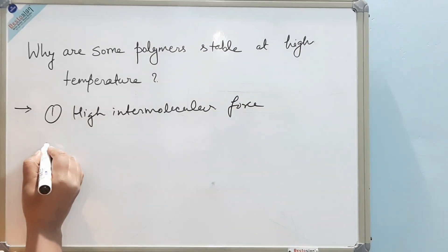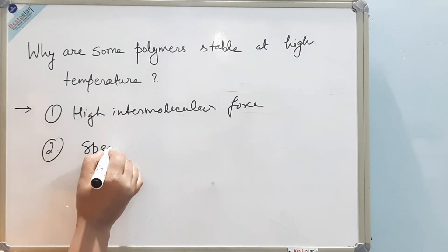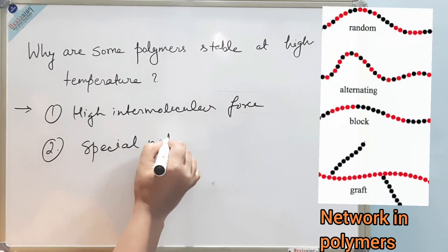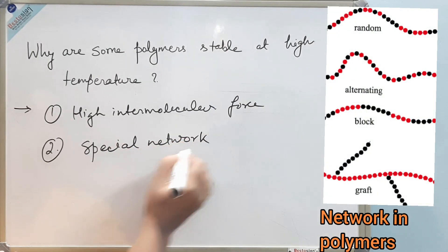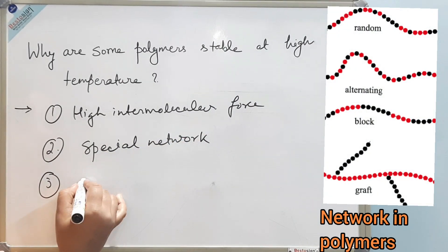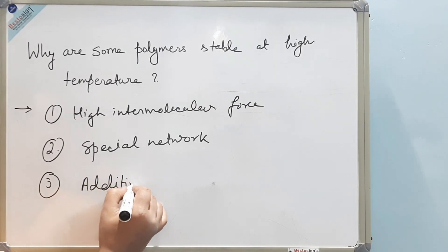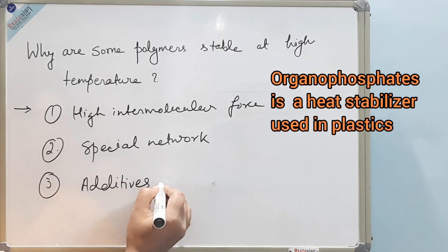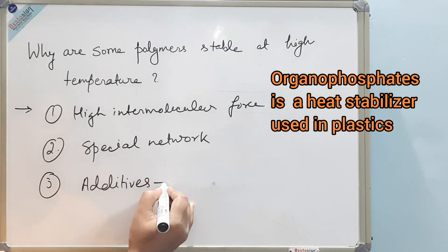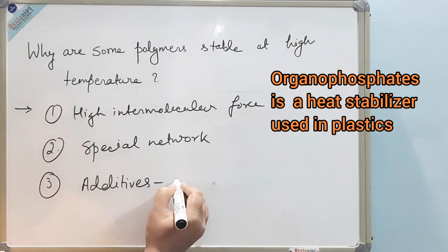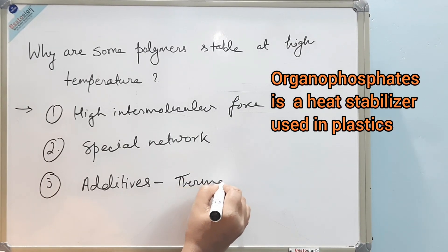The second quality is they have a special network structure. The third quality is that all of them have additives. These additives are extra chemicals which get added into these polymers to increase their thermal stability.